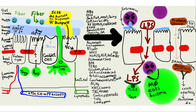Bad gut bacteria don't care whether we live or die — they'll eat whatever they can, including the mucus layer. Once they get in close proximity to the gut lining, they can cause leaky gut. The lack of fiber makes the intestinal lining cells weak, and they can't produce adequate amounts of tight junction proteins. Those proteins break down and bacteria can get onto the deep side of the gut wall.